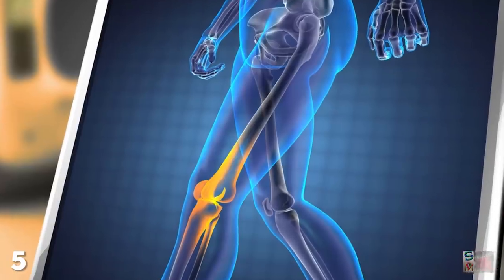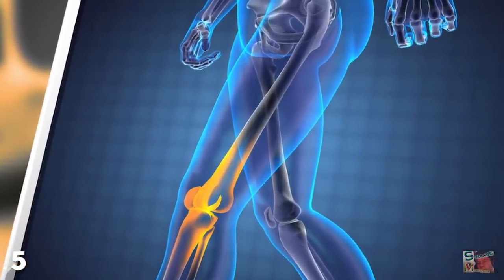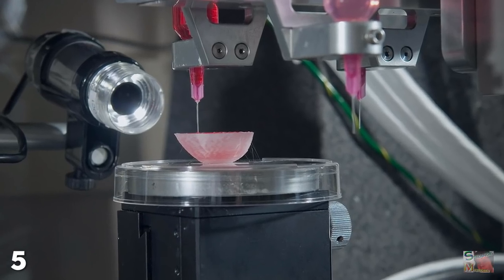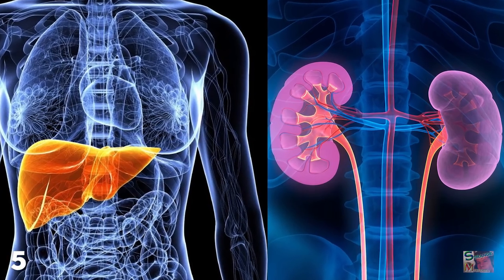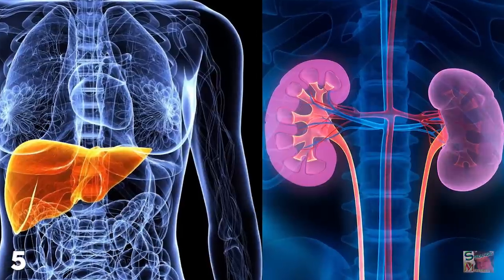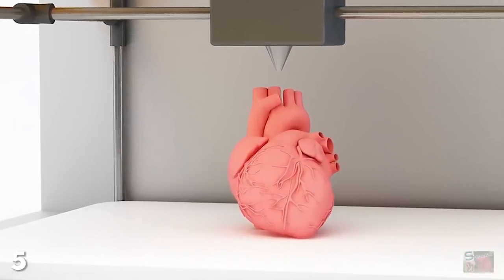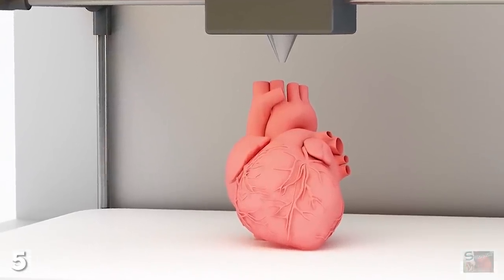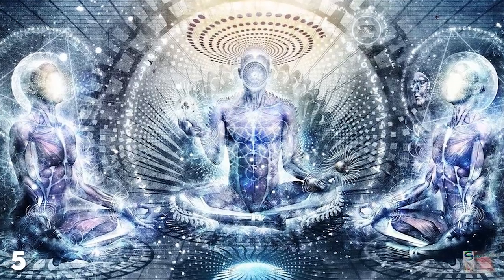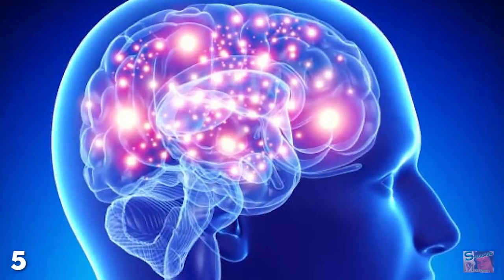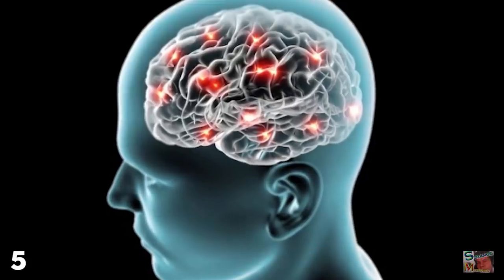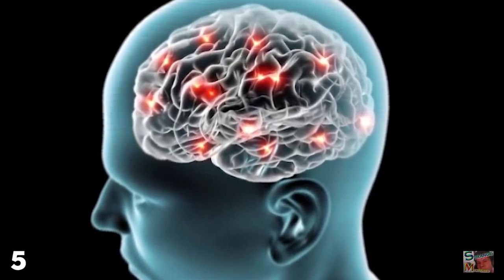Creating an artificial organ such as a liver or kidney is a lot more complex but still possible, since again you're merely reconstructing physical matter. Consciousness, now that's something else entirely. We think it's a function of the human brain, but one we cannot yet define in medical terms.